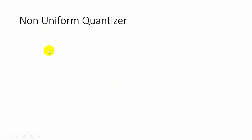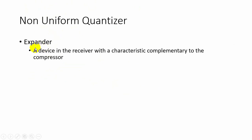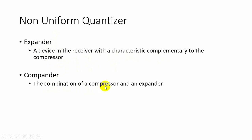After uniform quantization, we have an expander whose characteristics are complementary to the compressor. The combination of compressor and expander is called a compander. So in non-uniform quantization, first the signal is given to the compressor, then to the uniform quantizer, then to the expander, which produces the non-uniform quantization output.